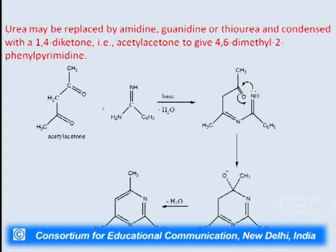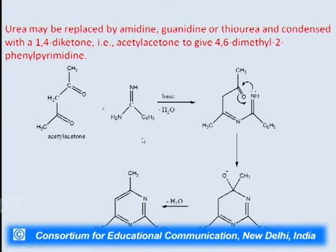Urea may be replaced by amidine, guanidine, and thiourea and condensed with a 1,4-diketone. For the 1,4-diketone we have taken acetylacetone. It can react with amidine in the presence of a base; water will go out so that the condensation reaction takes place, and we will get an intermediate product which after rearrangement and loss of water will give us the substituted pyrimidine.